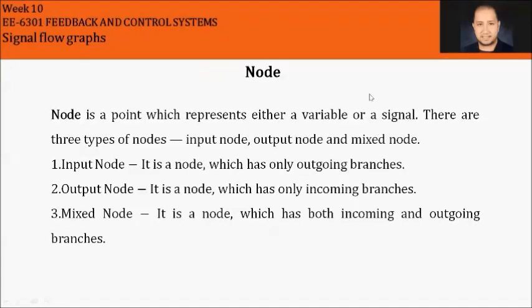We define nodes. A node is a point which represents either a variable or a signal. There are three types of nodes: input node, output node, and mix node. In feedback, input is a very important characteristic because the system will not work without input.